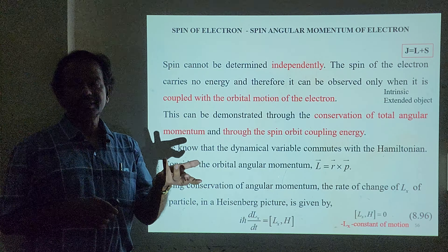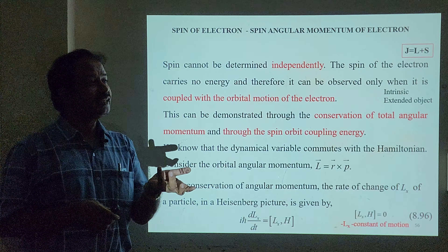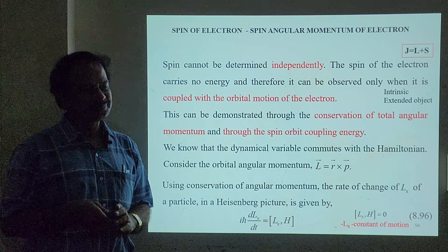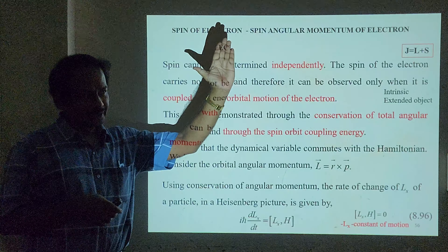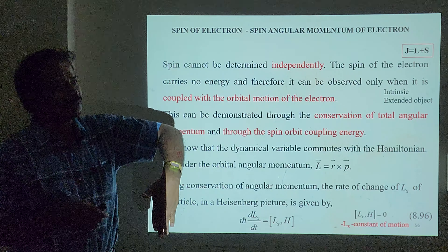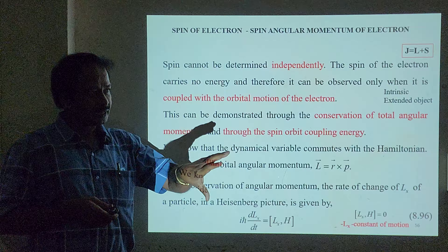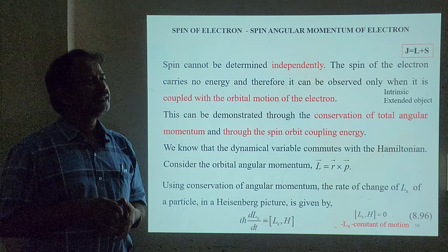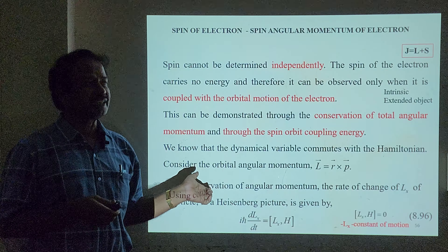When an electron passes through an inhomogeneous magnetic field, it will have a linear combination of spin up and spin down. The moment you measure with the help of the magnetic field, it shows spin up and spin down. If the orientation is upward with respect to the magnetic field, it shows only spin up. If the orientation is downward, it shows only spin down — one is +ℏ/2 and the other is −ℏ/2.